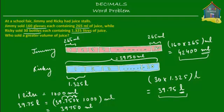The pink block is equal to 42,400 milliliters, while the blue block is equal to 39,750 milliliters. So it's quite obvious that Jimmy sold more juice — Jimmy sold a greater volume of juice than Ricky. That's your answer.